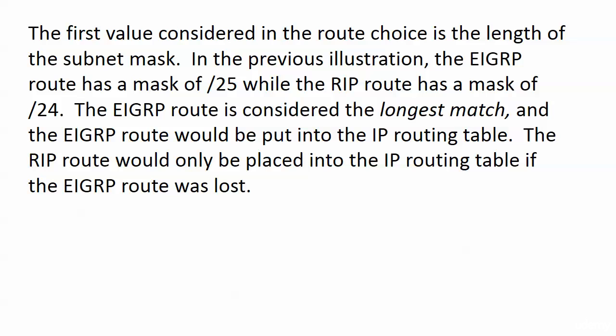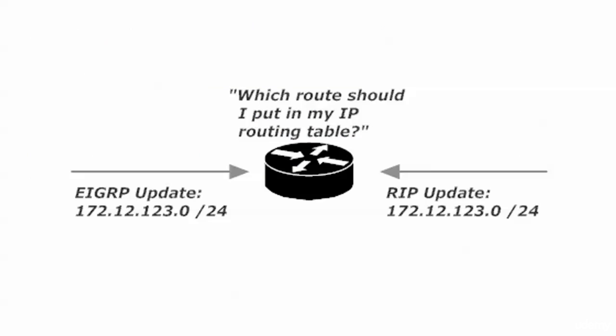It doesn't mean there's anything wrong with the RIP route — it's just that the EIGRP route is considered superior. If that EIGRP route was lost and the RIP route was the only one coming in for that network, then of course the RIP route would be used. So if admin distance didn't come into play there, when will it come into play?